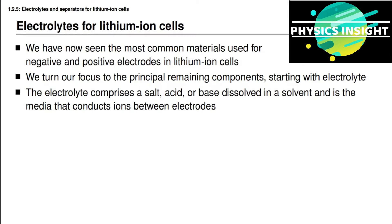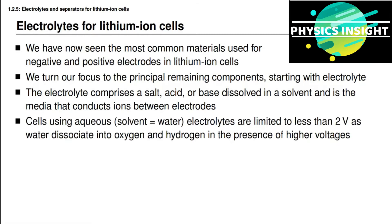The electrolyte is the media that conducts ions between the electrodes internal to the cell, and in a general electrochemical cell, the electrolyte consists of a solvent into which we dissolve either a salt, an acid, or a base. Some battery cells use an electrolyte whose solvent is water — we call those aqueous cells. But if you look at the electrochemical series, you will notice that water dissociates into hydrogen gas and oxygen gas at a potential of around 2 volts, so any battery cell having a voltage higher than 2 volts cannot use water as its solvent.